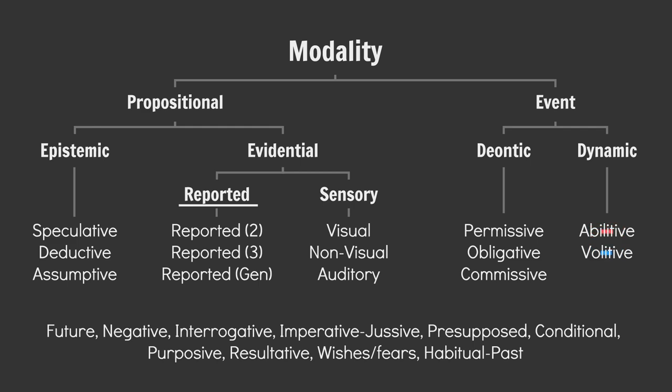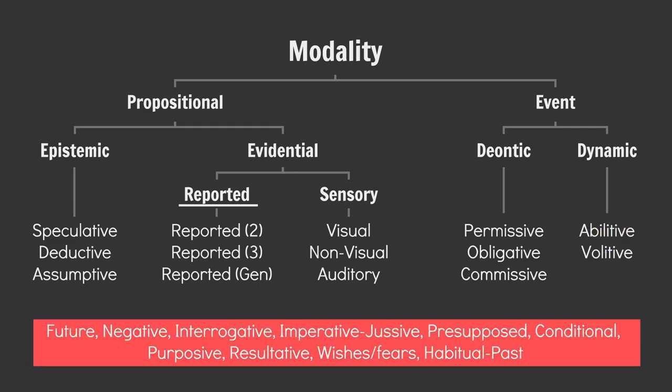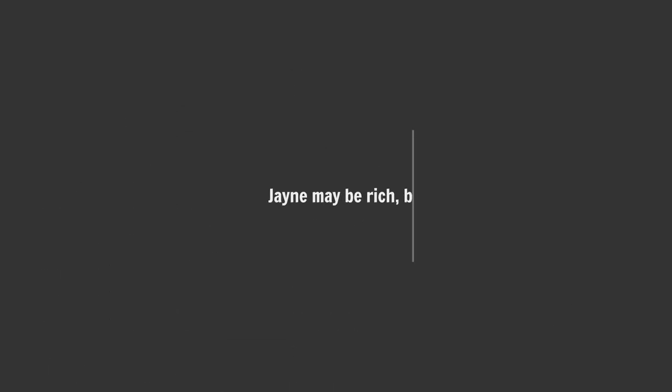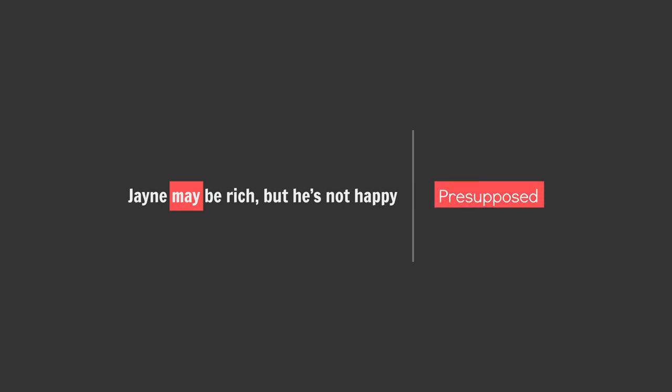And modality tree — done. Now for the extras. Consider the role 'may' plays in a sentence like 'Jane may be rich, but he's not happy.' May here is not speculative; it's being used to presuppose Jane's riches — as in, we both know Jane is loaded, but it turns out he's not happy. This use of 'may' in this context indicates presupposive modality.